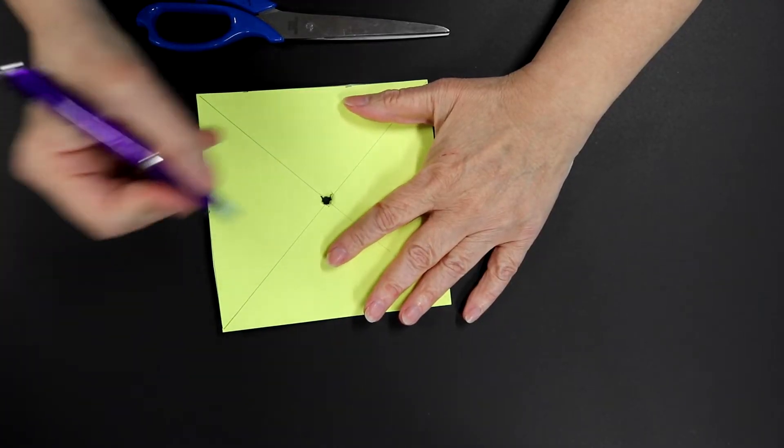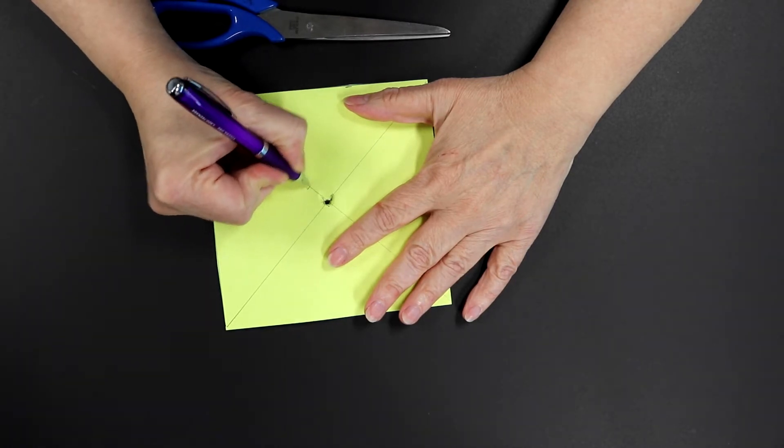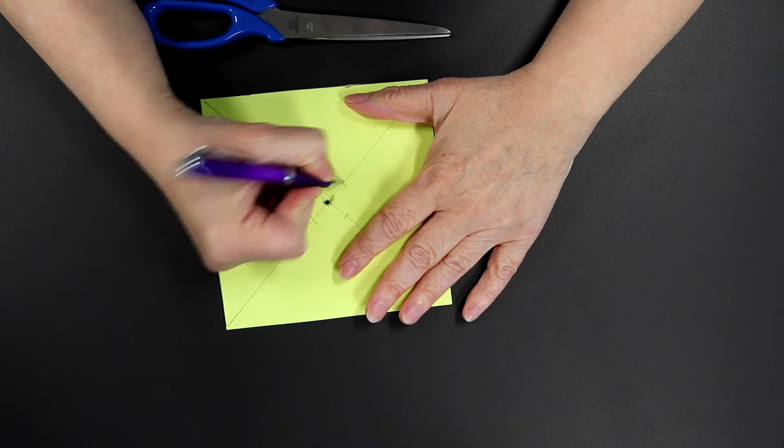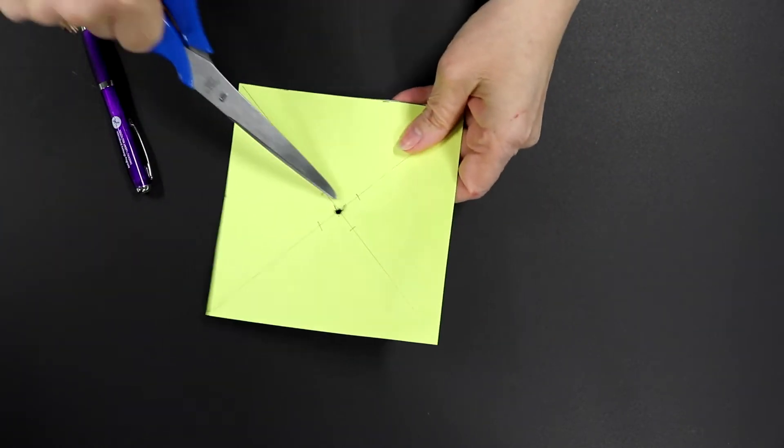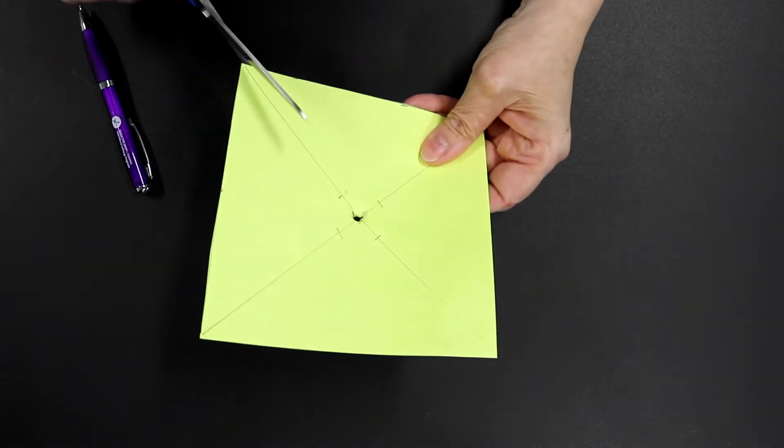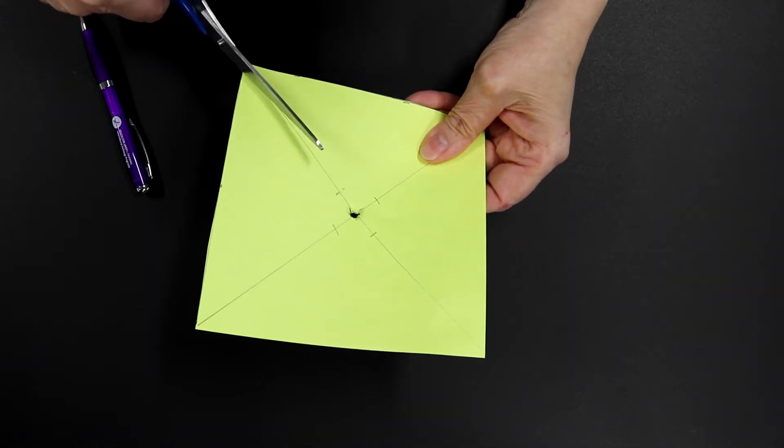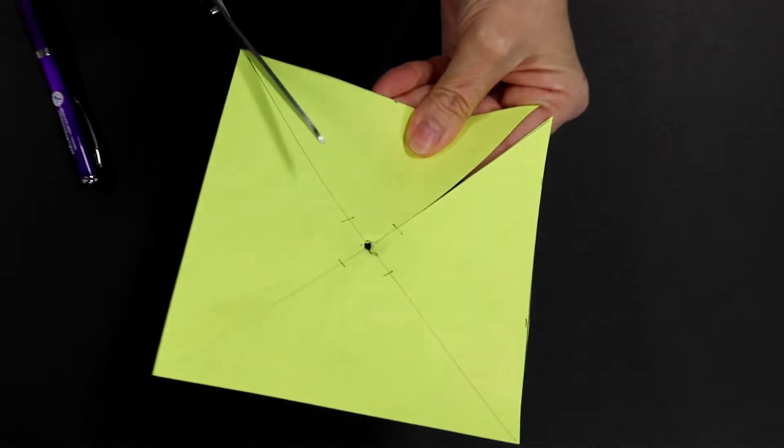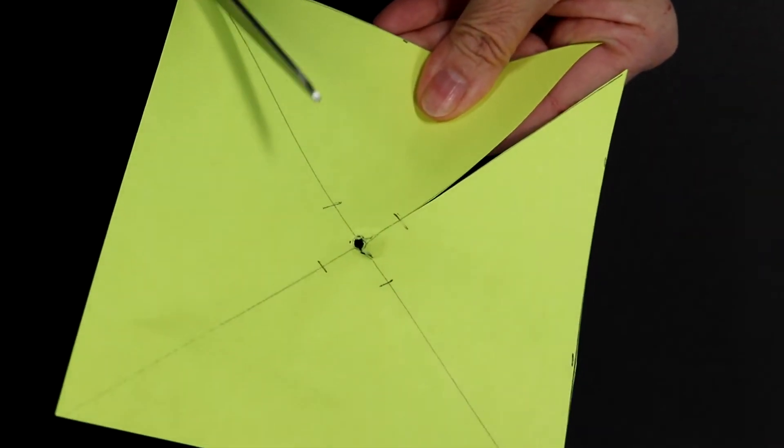So now draw a line about a half an inch away like that. And then you're going to cut along each one of these lines and stop where you made that little line about here. So there's the first one. And you do all four.